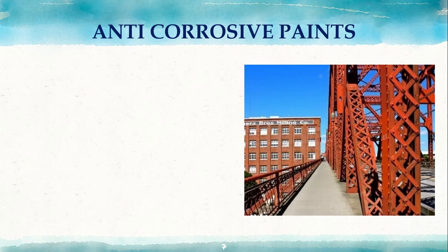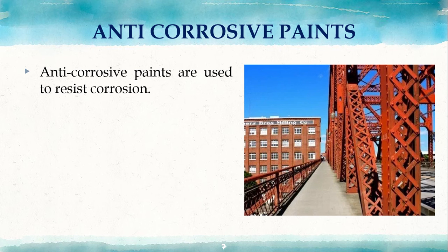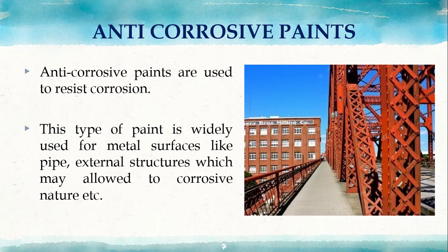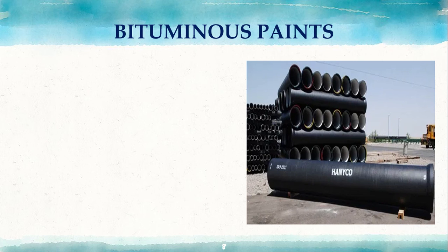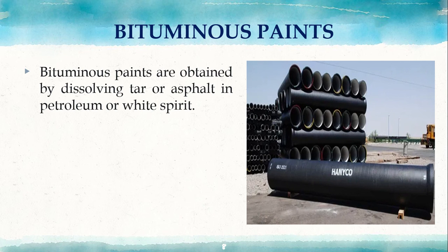The third type is anti-corrosive paint. As the name suggests, this paint is used to resist corrosion. It is widely used for metal surfaces like pipes and external structures that are more vulnerable to corrosion. Linseed oil is generally used as the binder or vehicle, and a strong dryer is added. Anti-corrosive paint is very cheap and lasts longer.